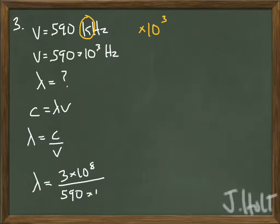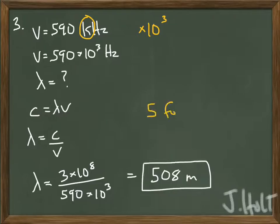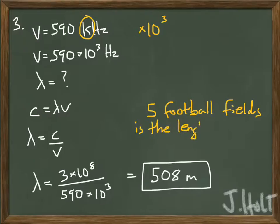We need to plug in the speed of light on top and the frequency on the bottom. If you enter it into your calculator, you should get 508 meters. So think about that. That's the wavelength. So the length between two waves is the length of five football fields. So that's a huge wave. And this is the thing about radio waves. A lot of the times we forget how big they are. Even though they're moving at the speed of light, a single radio wave can be the length of five football fields or even more.